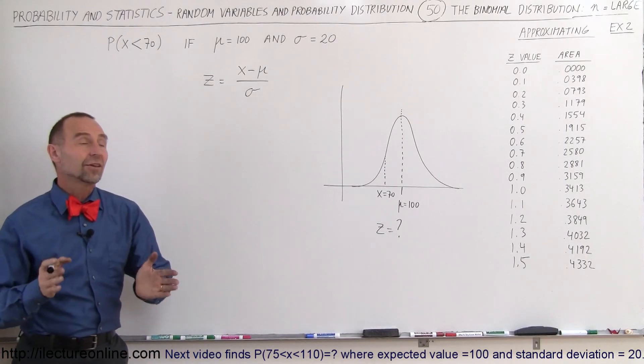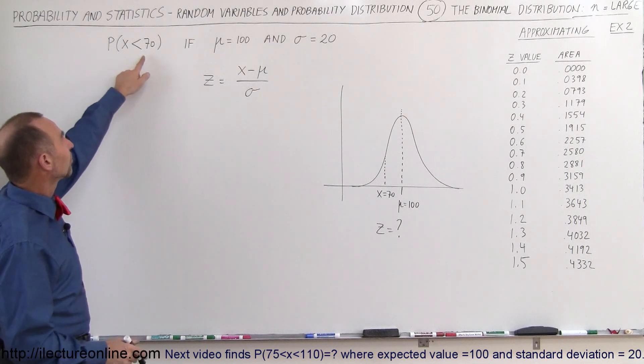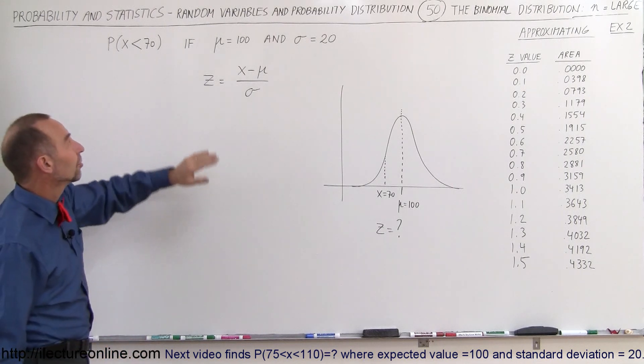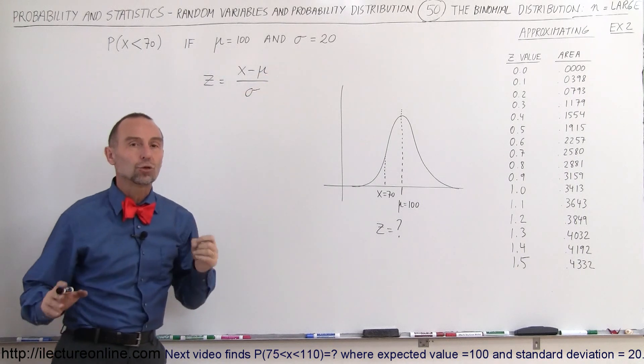Welcome to lecture online. In this example we're going to find the probability that x will be less than 70 under the conditions that the expected value is equal to 100 and sigma is equal to 20.